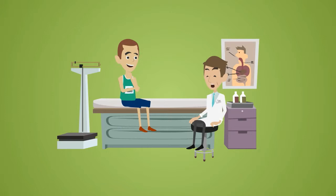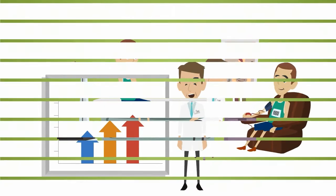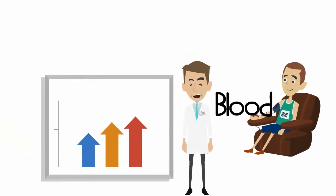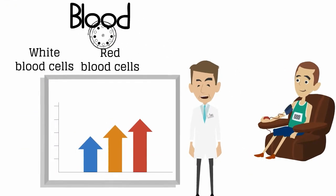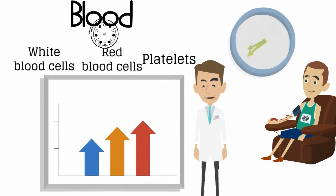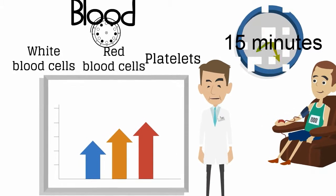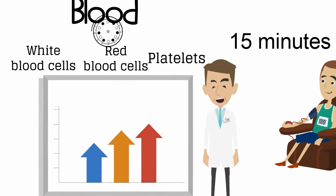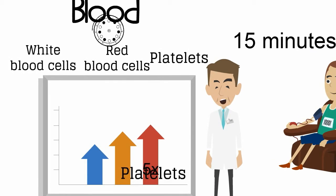On the follow-up appointment the doctor recommended doing PRP and explained the whole process. Blood is taken from your vein then placed on a centrifuge machine which separates the white blood cells and red blood cells from the platelets. This process takes about 15 minutes. Typically the concentration of platelets reach about five times your blood's platelet level.